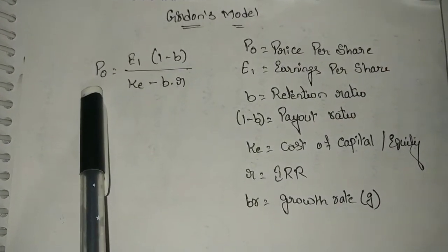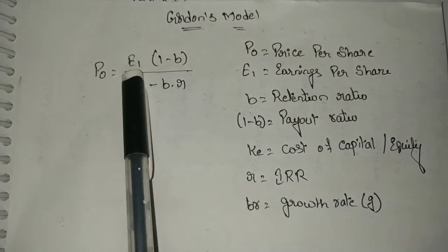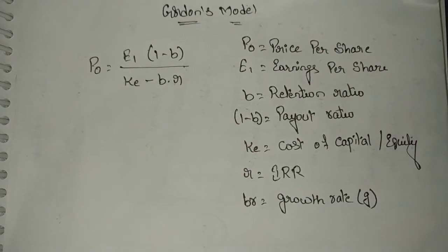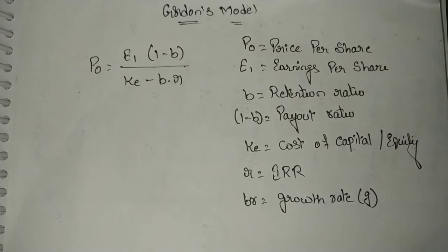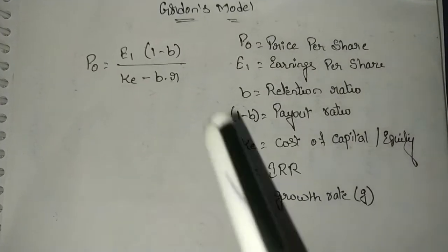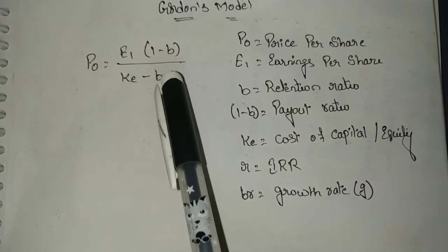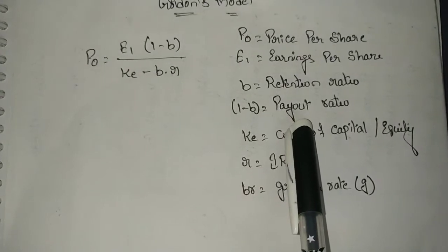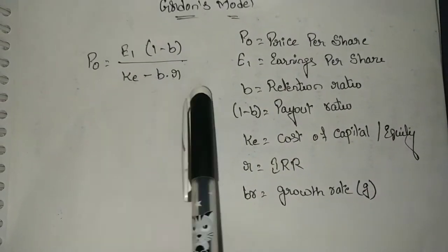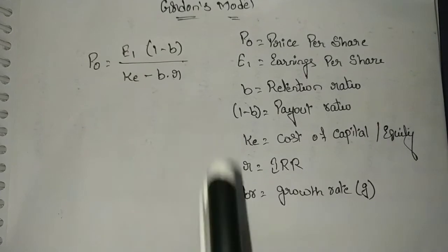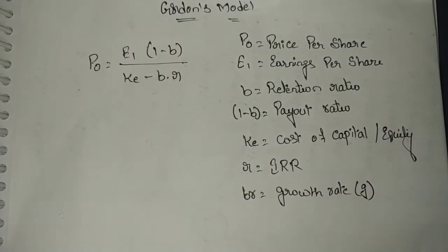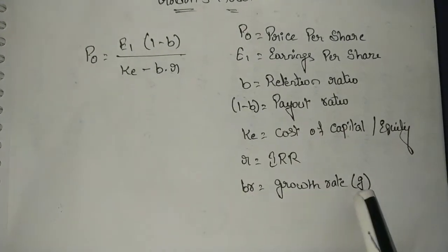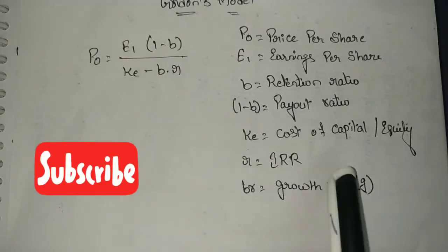In this formula, P0 stands for price per share, E1 stands for earnings per share, and b stands for the retention ratio. The problem will provide the dividend payout ratio — whatever remains after the payout ratio is the retention ratio b, so (1 - b) is the dividend payout ratio. ke is the cost of capital and r is the internal rate of return. If retention ratio and rate of return are not given separately, a growth rate g can be used in place of b×r.